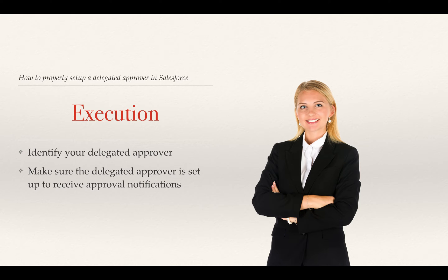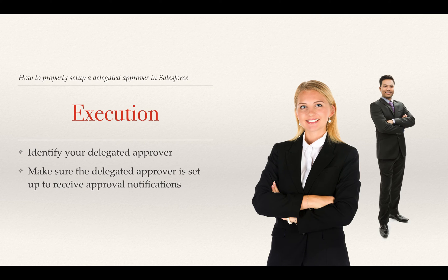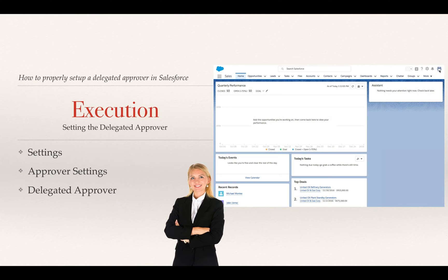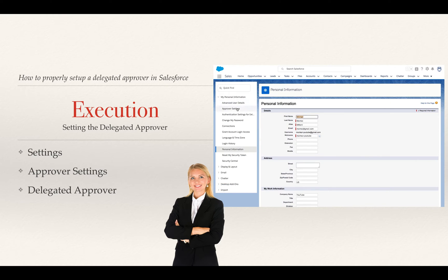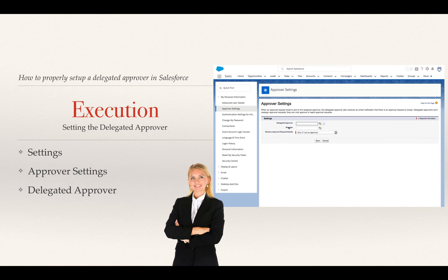So how do we do this in Salesforce? The first thing you want to do is identify who your delegated approver is going to be, and make sure the delegated approver is set up to receive notification emails from Salesforce so they can respond in real time. In this case, Jane needs to go into settings from the menu, then go over to her approver settings on the far left under 'My Personal Information,' and enter the name of the delegated approver — in this case, Cody DeBear. Once she does that, she will save the change, and that will now mark Cody as her delegated approver. Anything that comes in for Jane to approve will also be sent to Cody.